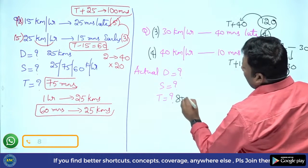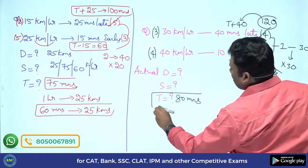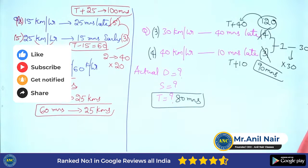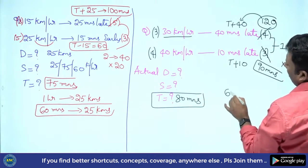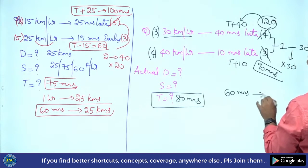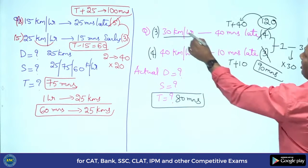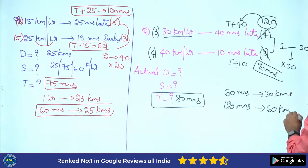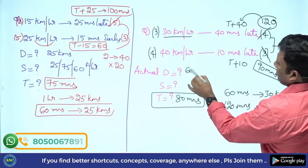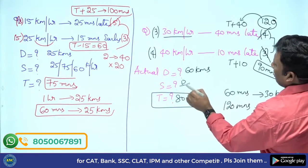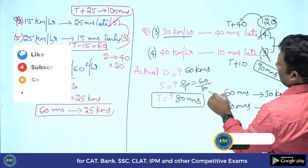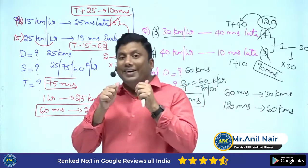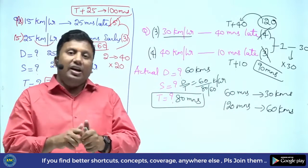t+40 = 120, so t = 80 minutes; t+10 = 90, so t = 80 minutes. Actual time is 80 minutes. For distance: at 30 km/h in 60 minutes he travels 30 km, but with this speed he travels 120 minutes, so distance = 60 km. Actual speed = 60 ÷ (80/60) km/h.